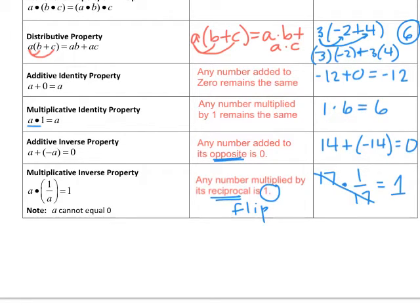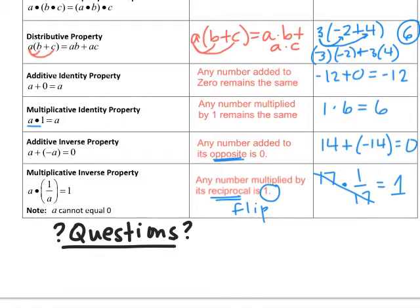At the bottom of the page, write any questions you have about what you've heard so far. When you come into class, I'm going to be asking for any questions — something that didn't make sense. Maybe put a little asterisk next to a property you didn't understand, or if an example was not clear. Please use the bottom of the page to write a couple of questions if you have any.